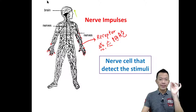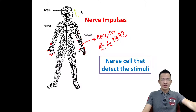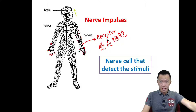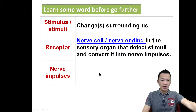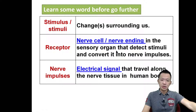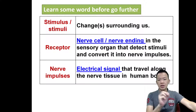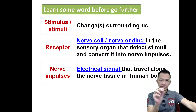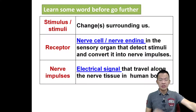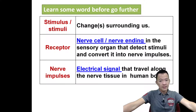So this is what we call a receptor — 感应器, 感应细胞 — nerve cells that detect changes in the environment. They produce nerve impulses. What are nerve impulses? They are electrical signals that travel along the nerve tissue in the human body. They carry information throughout our body. We call them nerve impulses — 神经讯息.